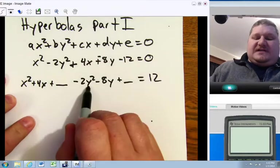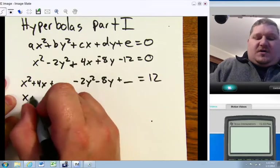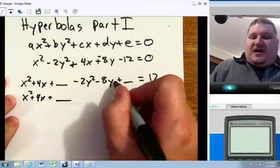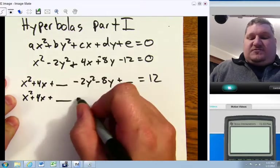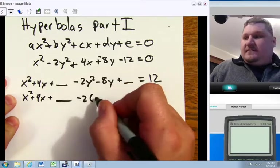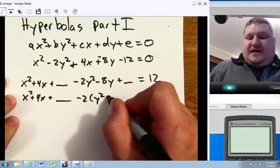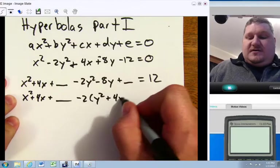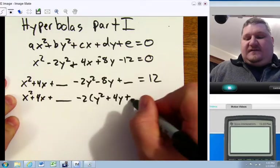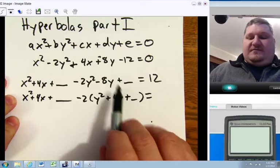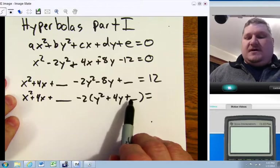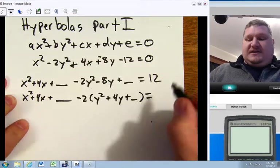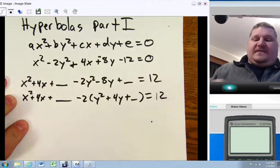Just like in the ellipse, we're going to have to factor out anything that's in front of the Y squared before we can complete the square there. Be careful when factoring out the minus. You have to do it out of all pieces. The reason I have plus and plus is because these are just placeholders. We won't know what that sign is until we complete the square.